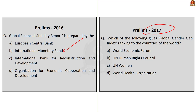Now the 2017 question: Which of the following gives the global gender gap index ranking to the countries of the world? Option A: World Economic Forum. Option B: UN Human Rights Council. Option C: UN Women. Option D: World Health Organization. The correct answer is option A, World Economic Forum. The World Economic Forum gives an index called the Global Gender Gap Index.